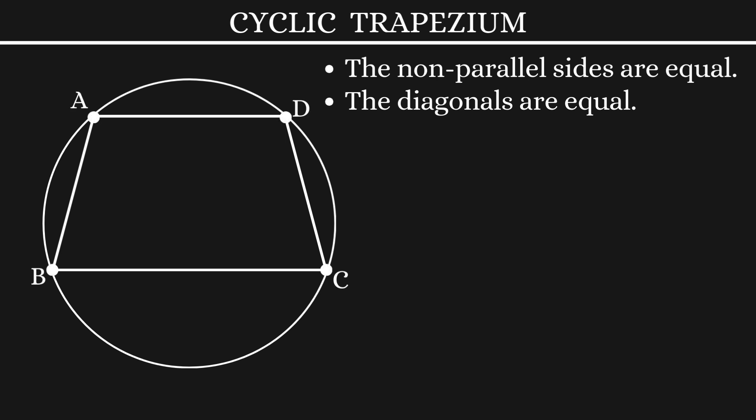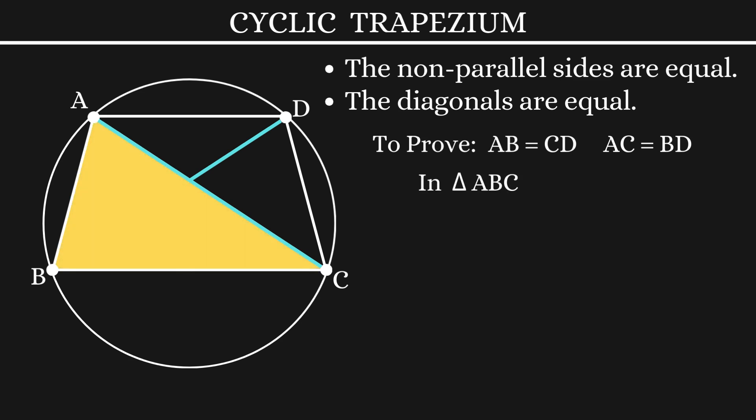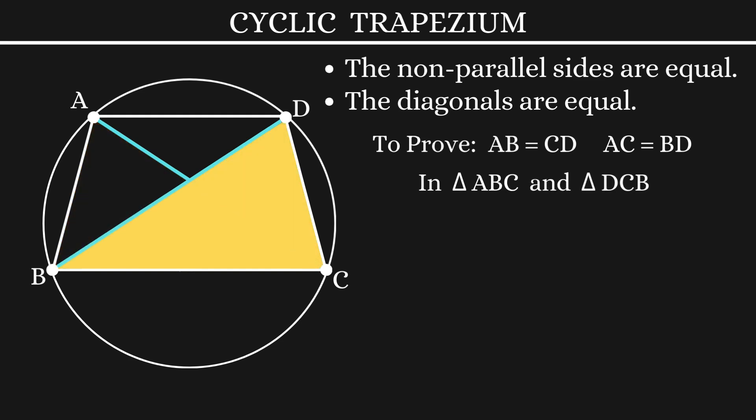ABCD is our cyclic trapezium. So, here we need to prove that the non-parallel sides AB is equal to CD and the diagonals AC is equal to BD. To do that, let's consider the triangles ABC and DCB.